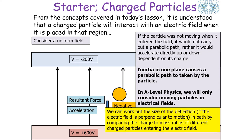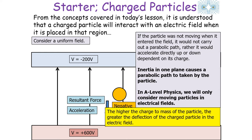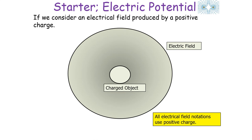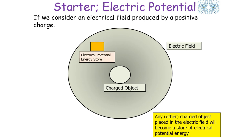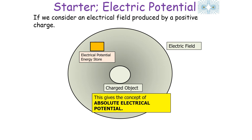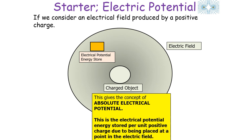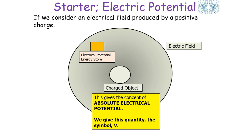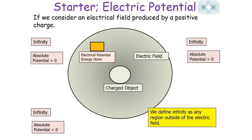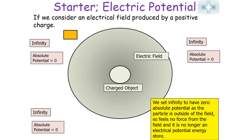Now let's consider electrical potential. If we consider an electrical field produced by a positive charge, any other charged object placed in it becomes a store of electrical potential energy, produced as a result of the electrostatic force acting on the object. This gives us the concept of absolute electrical potential: the electrical potential energy stored per unit positive charge due to being placed at a point in the field, given the symbol V. We set the absolute electrical potential to zero outside the field — at infinity — where the particle would no longer feel a force and would no longer be an electrical potential energy store.